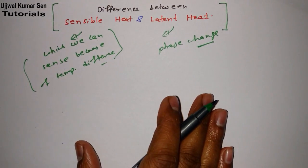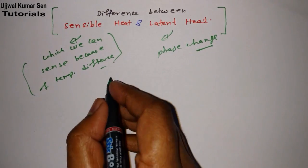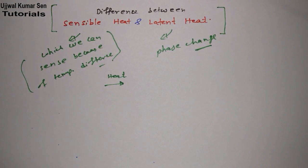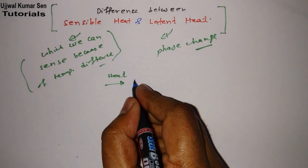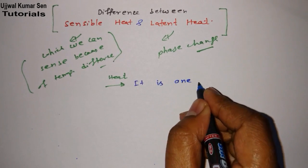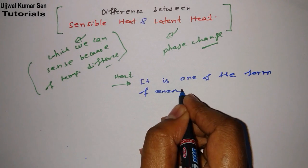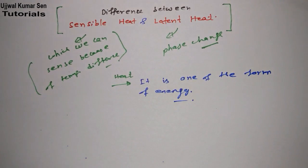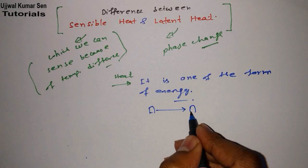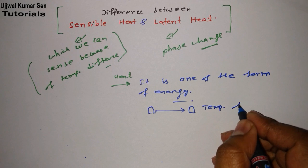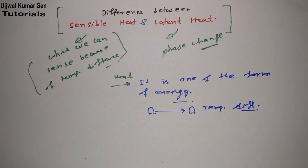Let me share with you in depth. What is basically heat? If you want to understand what heat is, it is one of the forms of energy. The energy transfer is taking place — that means energy is going from here to here, heat is going from here to there — and that's because of temperature difference.